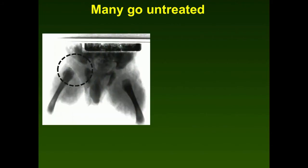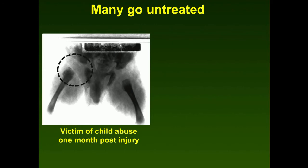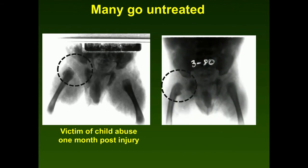Unfortunately, some of these go untreated. This is often seen in non-accidental trauma or child abuse. One patient showed up a month post-injury — parents said he fell out of bed, but it was actually a twisting injury. You can see it went on to remodel. At about six months there was some remodeling; there's still some retroversion, but the angulation remodeled and the femoral head is reduced with the metaphysis settling into normal position.